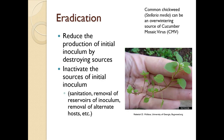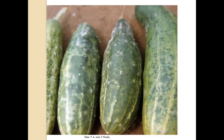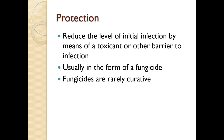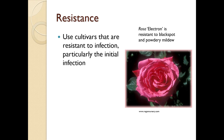Eradication reduces the production of initial inoculum by destroying or inactivating sources through sanitation, removal of reservoirs, and removal of alternate hosts. Common chickweed, a winter annual, can be an overwintering source of cucumber mosaic virus. Protection reduces initial infection using a toxicant or barrier - usually a fungicide, which is rarely curative but acts as a protectant. Resistance means using cultivars resistant to infection; here we have Rosa 'Electron', which is resistant to black spot and powdery mildew.